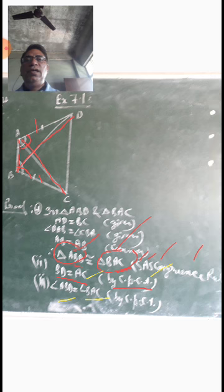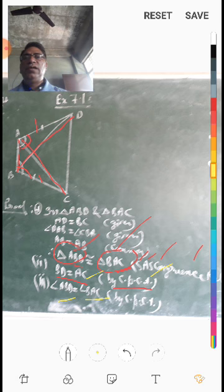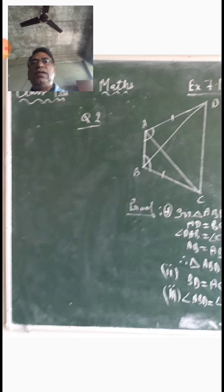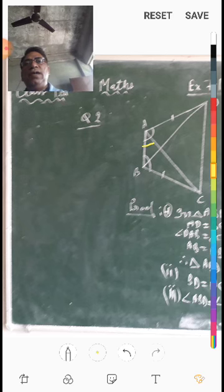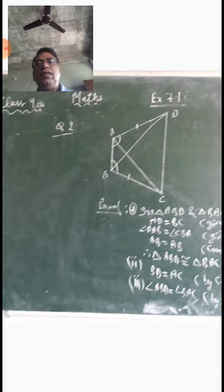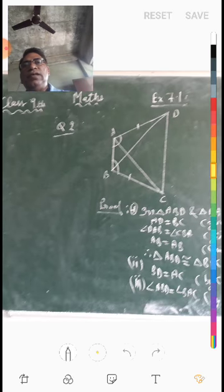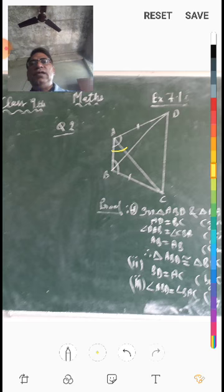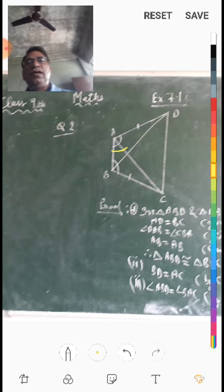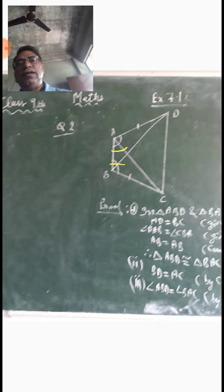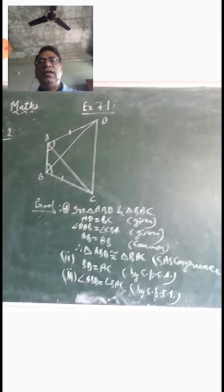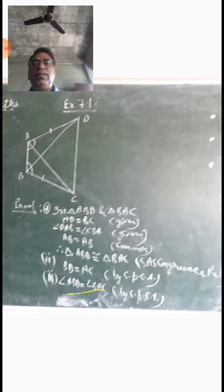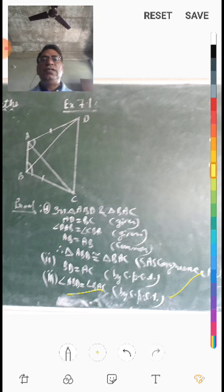Also, angle ABD equals angle BAC — this comes from triangle ABD and triangle BAC respectively. These angles are also corresponding parts of the congruent triangles, so they are equal by CPCT (Corresponding Parts of Congruent Triangles).